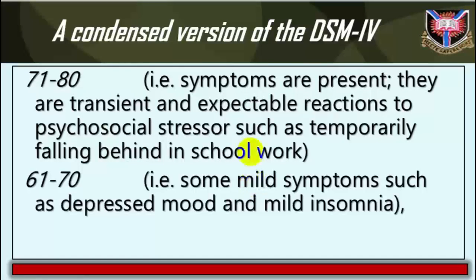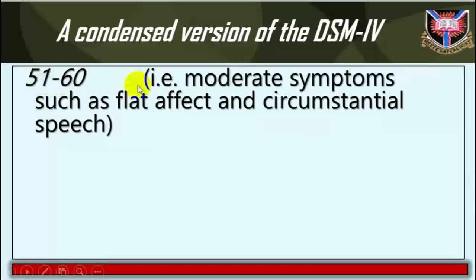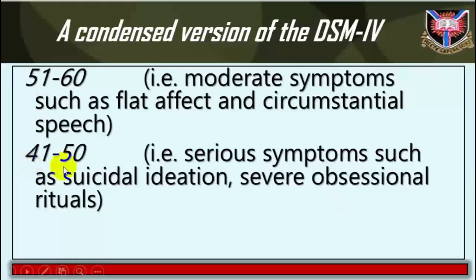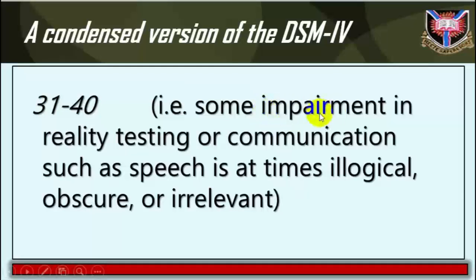61–70 indicates some mild symptoms such as depressed mood and mild insomnia. 51–60 indicates moderate symptoms such as flat affect and circumstantial speech. 41–50 indicates serious symptoms such as suicidal ideation and severe obsessional rituals. 31–40 indicates some impairment in reality testing or communication, such as speech that is at times illogical, obscure, or irrelevant.